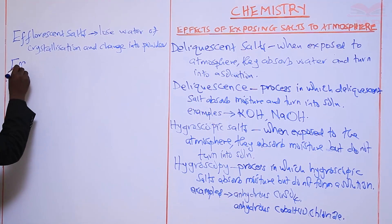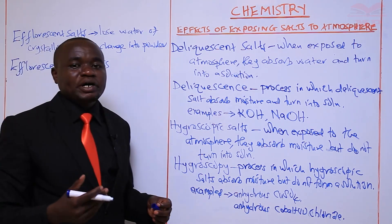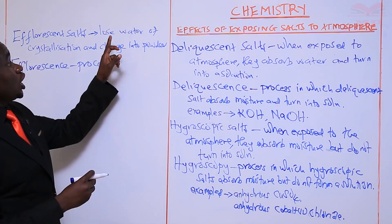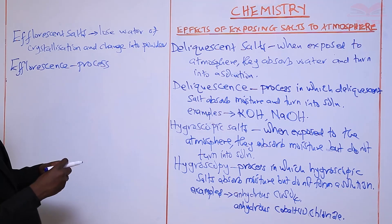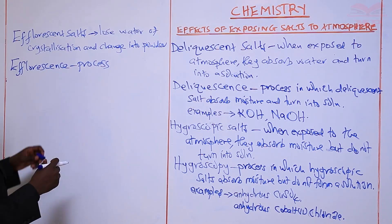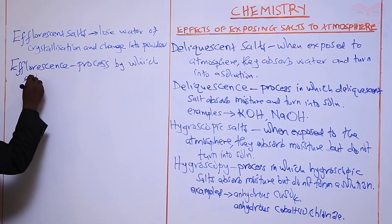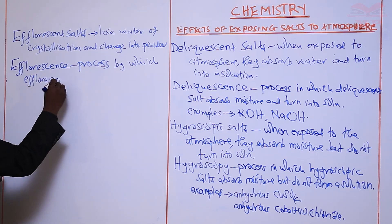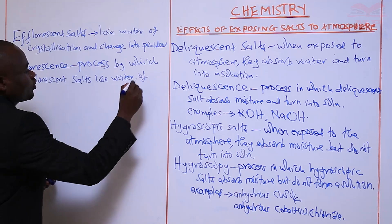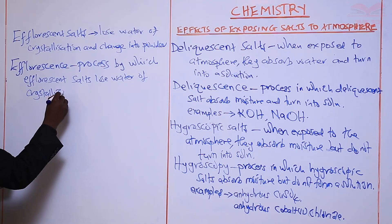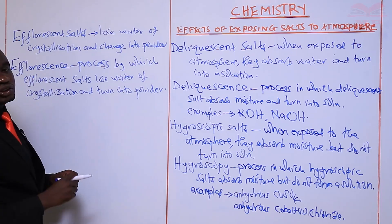The process that those salts undergo we call it efflorescence. Efflorescence is a process by which efflorescent salts lose water of crystallization and turn into powder.